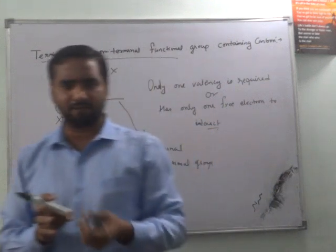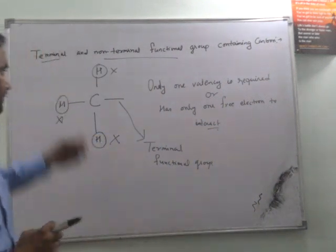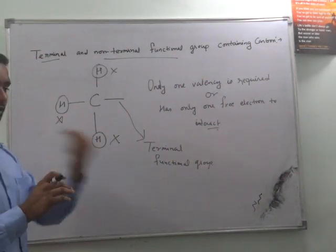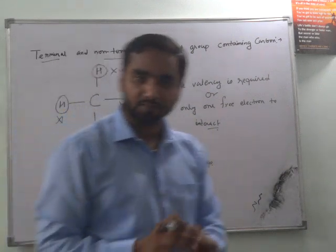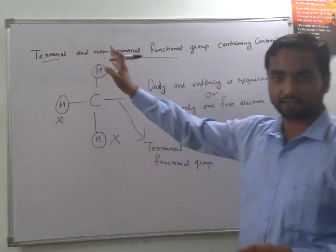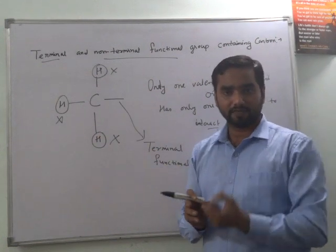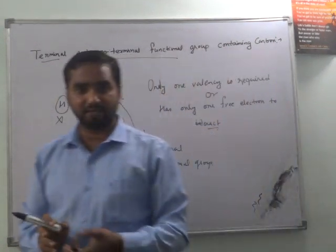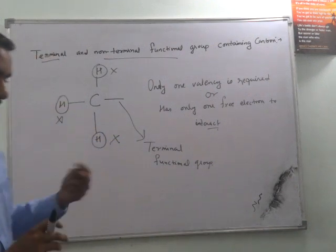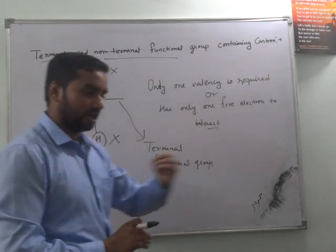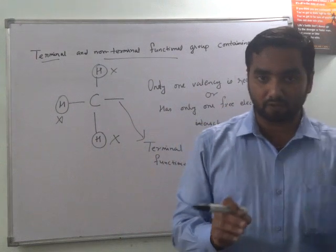If there is something which is going to be terminated at that functional group, it is called a terminating functional group. Now we are talking about carbon, a non-metal element which has 4 valencies. It means 4 outermost electrons which share with each other to complete its octet.